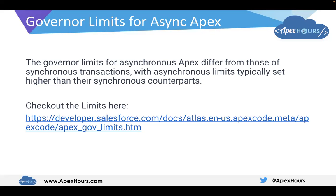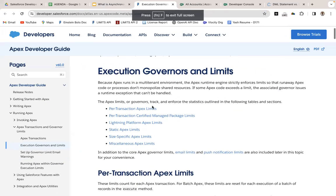The governor limits for asynchronous Apex differ from those of synchronous transactions. In synchronous and asynchronous we have different governor limits. Typically, asynchronous limits are higher than their synchronous counterparts. You can check out the limits in the Salesforce developer documentation.